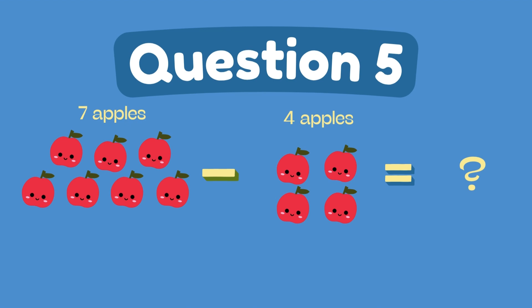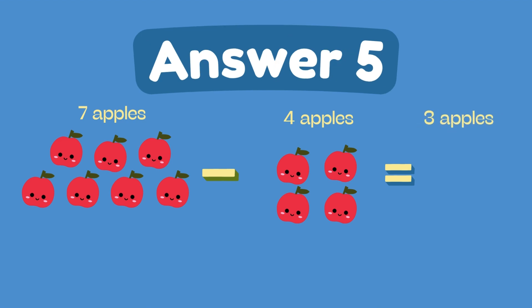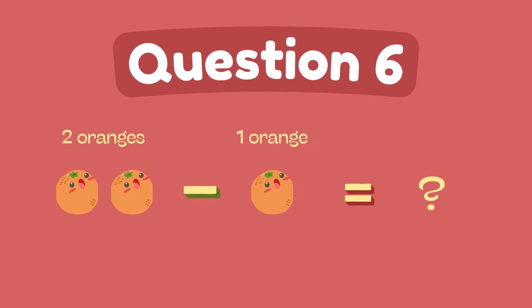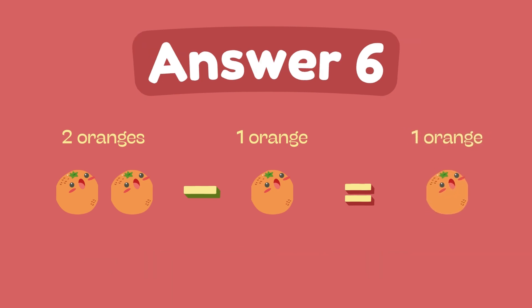What is 7 minus 4? The answer is 3. What is 2 minus 1? The answer is 1.